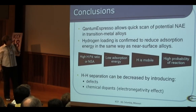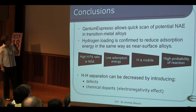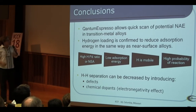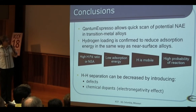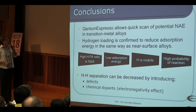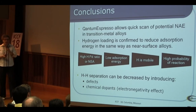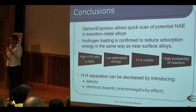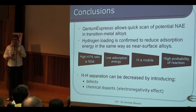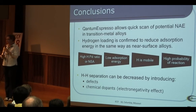The overall conclusions: Quantum Espresso allows a quick scan of potential nuclear active environments in transition metal alloys. Hydrogen loading is confirmed to reduce absorption energy in the same way as near-surface alloys, meaning hydrogen is mobile on the surface, increasing the probability of reaction. H-H separation can be decreased even more by producing either defects or chemical dopants based on electronegativity effects. And there is much more that can be done with this powerful software — it is definitely a work in progress. Please proceed with questions.